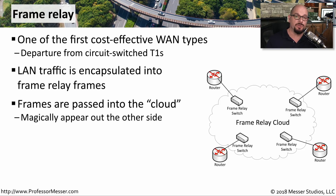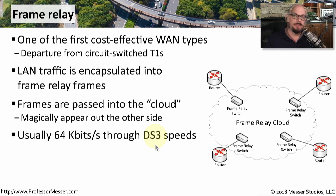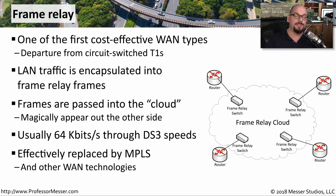As the end user, you never saw what that process happened to be. We would simply put data into the Frame Relay cloud with the destination location, and the provider would take care of getting it to that remote site. On the low end, it was common to see Frame Relay installed on 64 kilobit per second, and you could have that speed range all the way up to DS3, which would be around 45 megabits per second. This has been effectively replaced with MPLS and other types of networking, but you may still see Frame Relay implementations used on legacy networks.